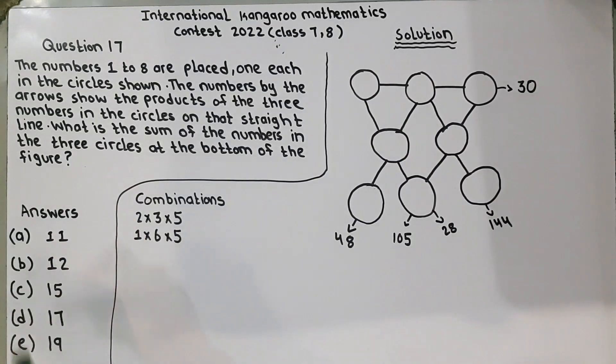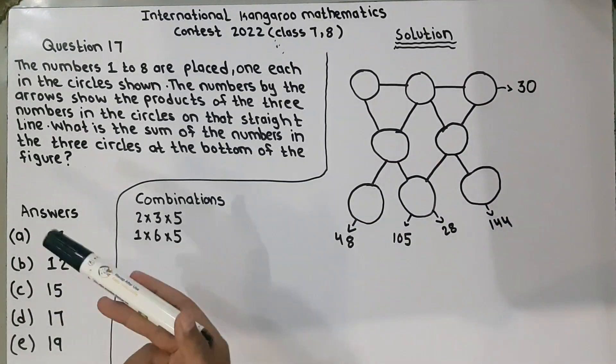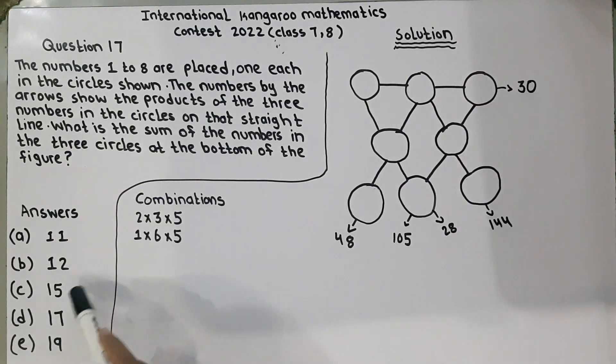We will circle here. Here they have given the answers 11, 12, 15, 17 and 19. It means the 3 numbers we plus here, if it is 11, it will come 11, 12, whatever. Let's start solving.